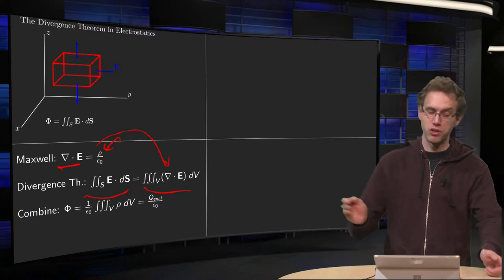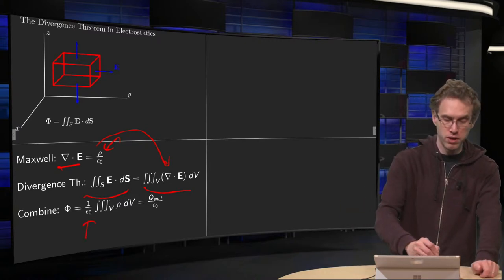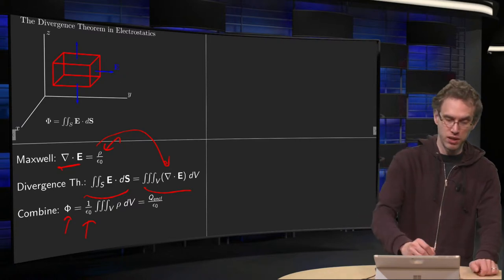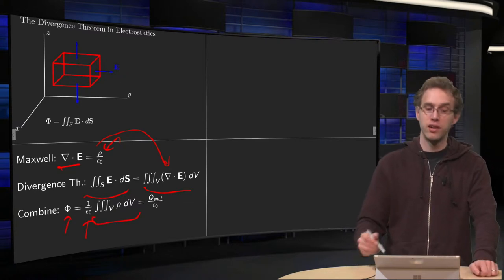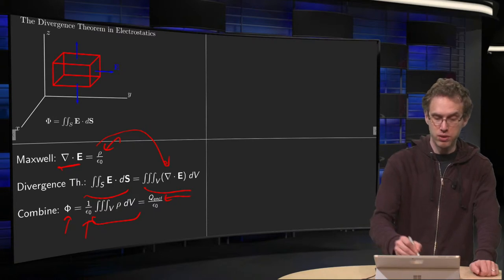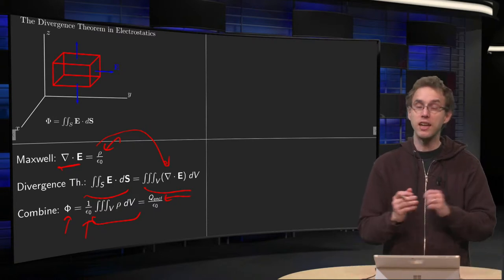The epsilon zero is a constant, so you can put it in front. So your flux phi equals 1 over epsilon zero times this integral over here, which is exactly the total charge in your solid.